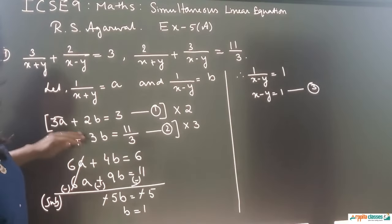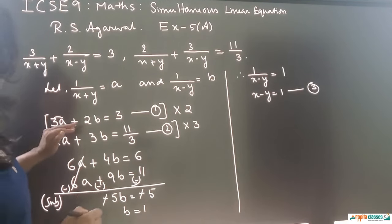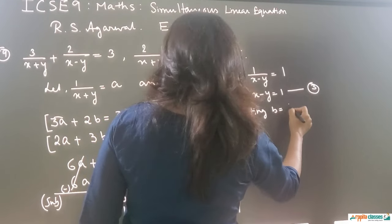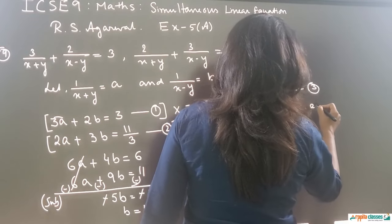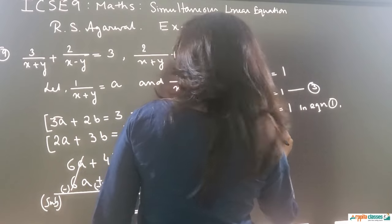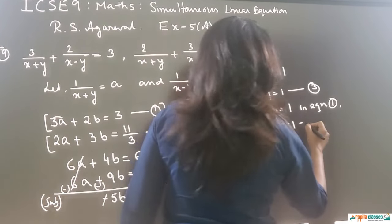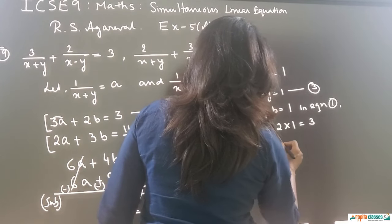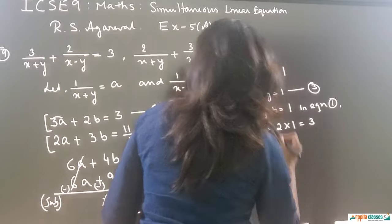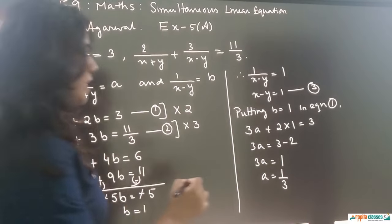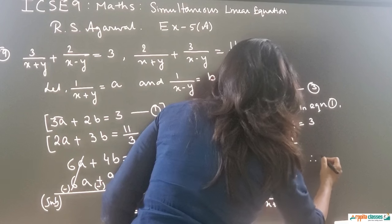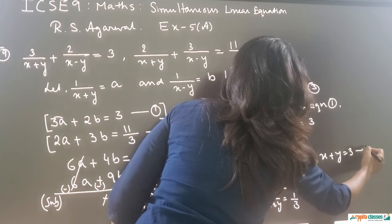Now we put B equals 1 into equation 1: 3A plus 2(1) equals 3, so 3A equals 1, giving A equals 1/3. Since A is 1 upon (x+y), we have 1 upon (x+y) equals 1/3, and therefore x plus y equals 3. This is equation 4.